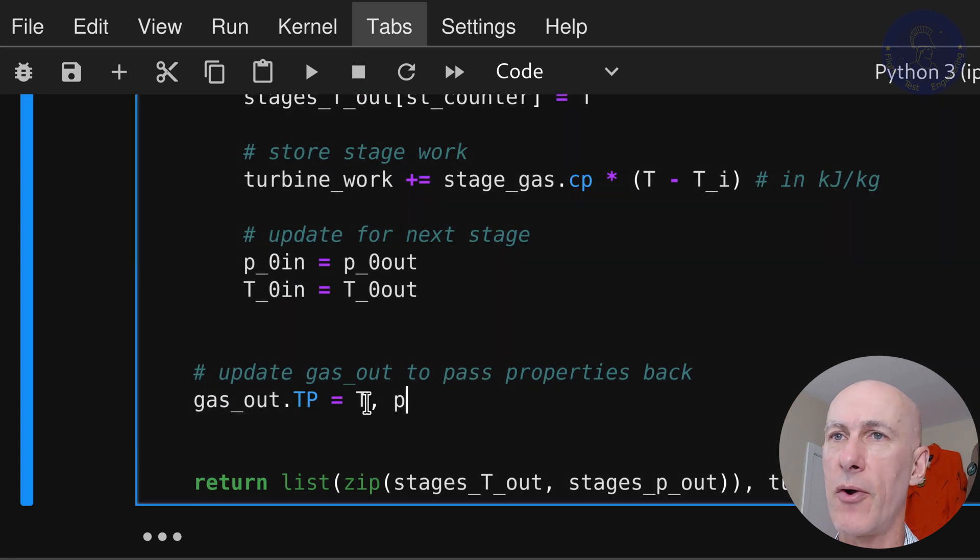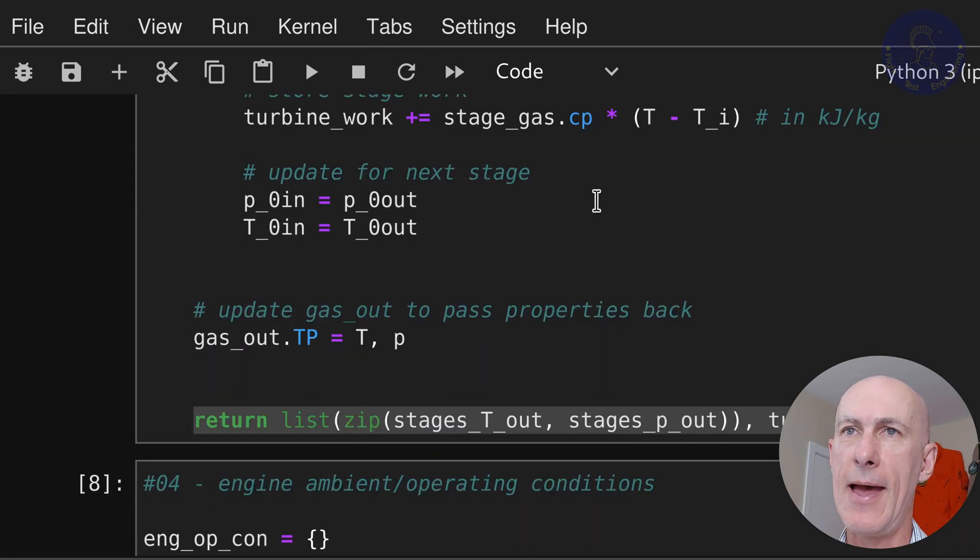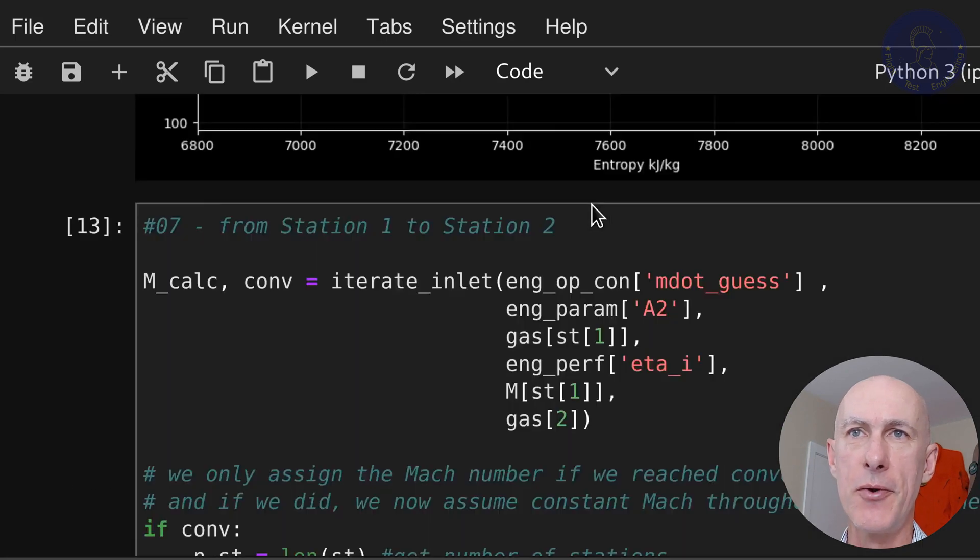Last, we update the gas going out and return the values. And we should be ready to run this. Let's scroll down and do it, up to number 13 here.